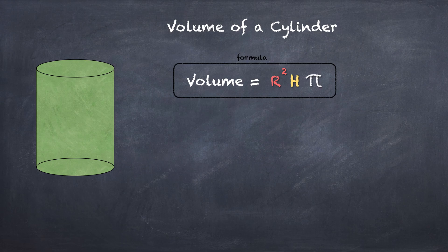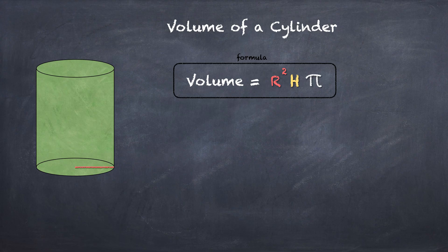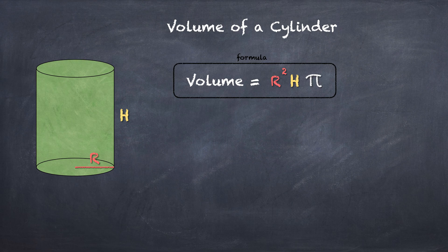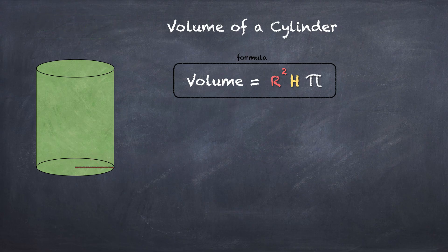So let's look at volume of a cylinder. Here is the formula: the radius squared times the height times π. So I would just do it in those three steps every time. There's our radius, there's our height. Those are the only two parts you need to find for volume of a cylinder. Go ahead and screenshot this for your notes.